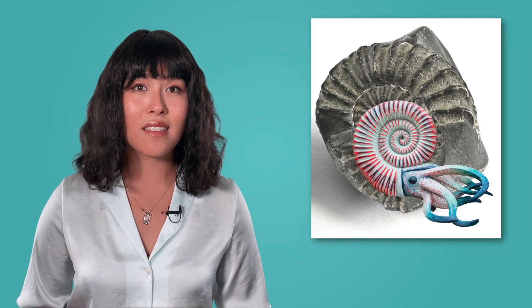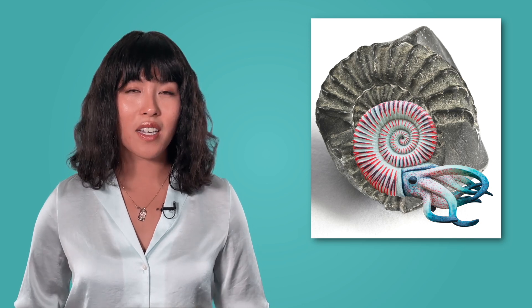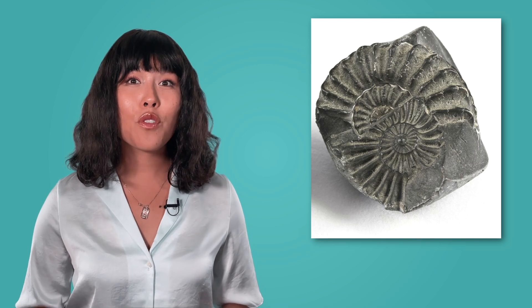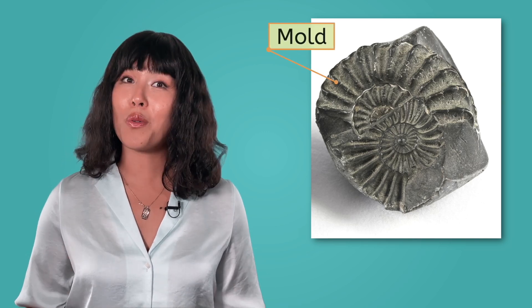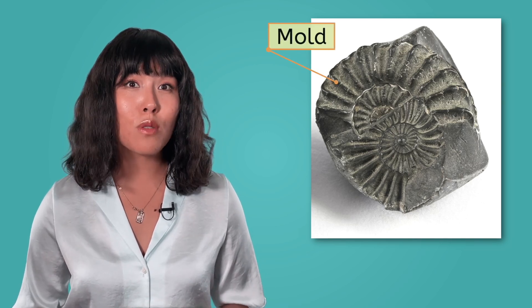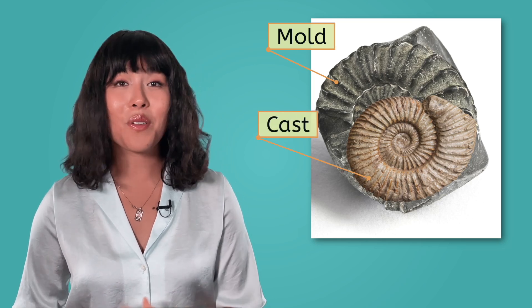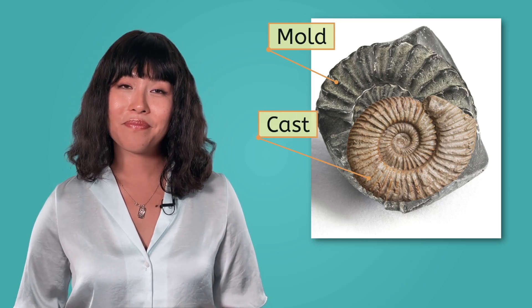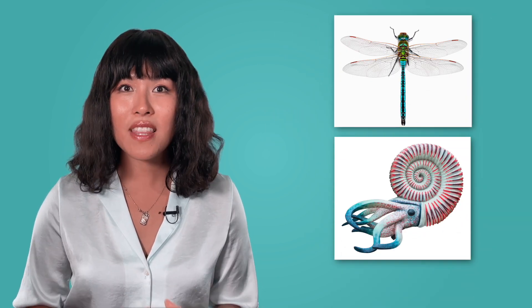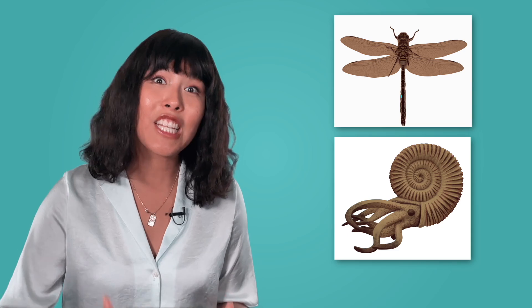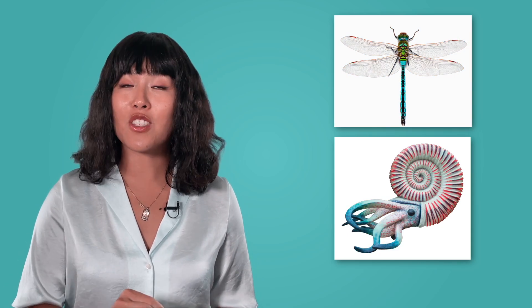Another way fossils form is when an organism's remains leave an impression in a rock, but the remains themselves completely decay and disappear. The leftover impression is called a mold. Over time, this mold might fill up with sediment, which creates a cast of the remains — a rock in their exact shape. So fossils don't really form when a living thing's remains are turned into rocks; they form when those remains are replaced with rock instead.